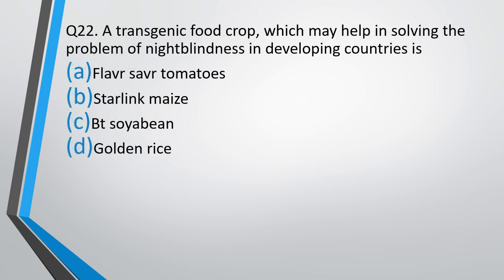Question number 22. A transgenic food crop which may help in solving the problem of night blindness in developing countries is: Flavr Savr, Starlink maize, Bt soybean, or golden rice. The correct answer is option D, golden rice.